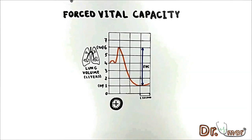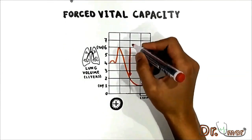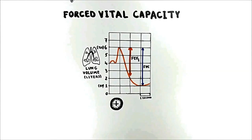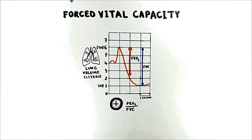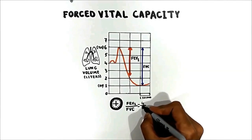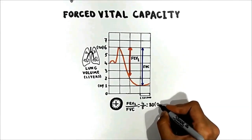Normally, most air in the FVC maneuver is expired during the first second. The volume of air expired in the first second is called FEV1 — forced expiratory volume in one second. Another important parameter is the FEV1/FVC ratio. The FEV1 is 4 liters whereas the FVC is 5 liters, so the FEV1/FVC ratio is normally 80% or 0.8.